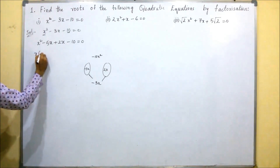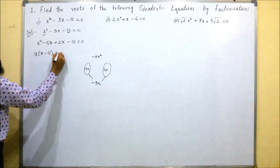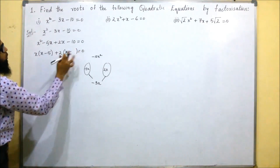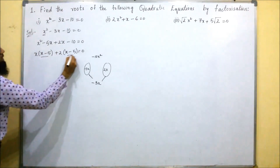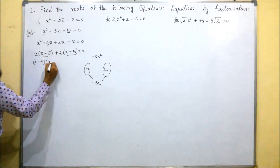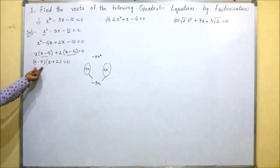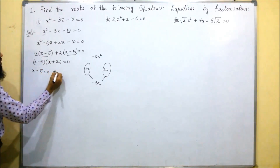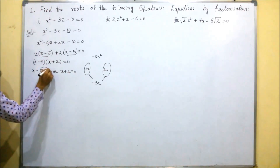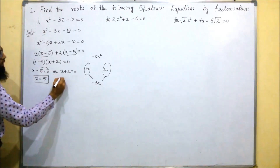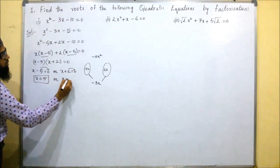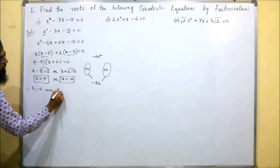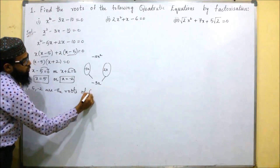We take x as common: x(x minus 5) plus 2(x minus 5) equals 0. Then x minus 5 is common, giving (x minus 5)(x plus 2) equals 0. So x minus 5 equals 0 or x plus 2 equals 0. Solving, x equals 5 and x equals minus 2. Therefore, 5 and minus 2 are the roots of the quadratic equation.